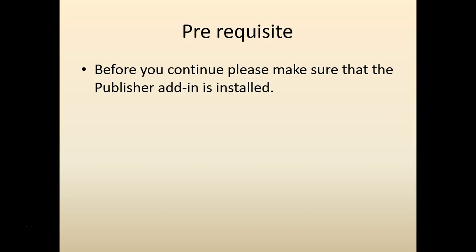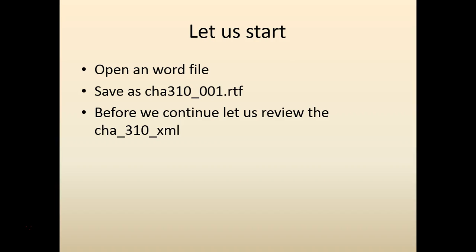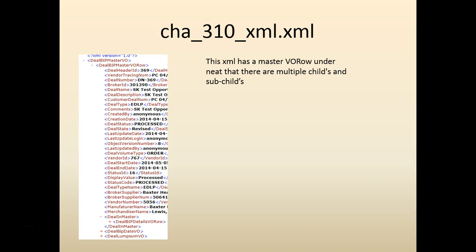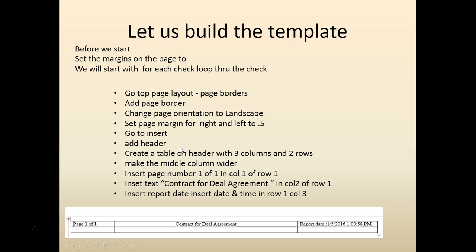Make sure your BA Publisher is installed. We'll start with an RTF file. Before we continue, let's look at the XML file. The XML file has a root under which there are different child elements and sub-child elements. We will start with the basic template.